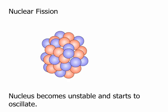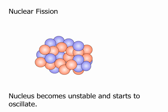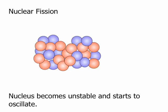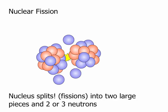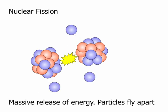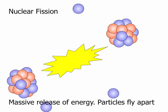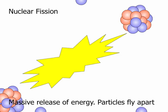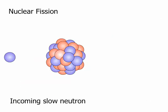It's going to split up into two different parts - we call these daughter nuclei. When it does, a lot of energy is given off, as well as three neutrons which come out. And this is all nuclear fission is.